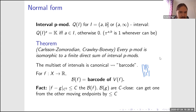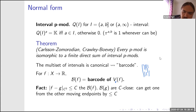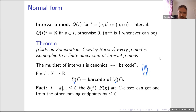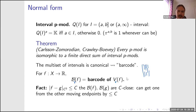For a Morse function, we have a barcode associated to it via its persistence module; you can fix a degree. A nice fact is that if two functions are C0-close, then their barcodes are also close — the closeness is measured by the same number. Two barcodes are C-close if one can get from the other by moving the endpoints of bars by less than C.